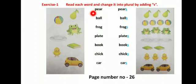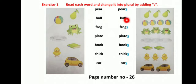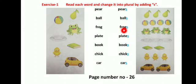P-E-A-R, pear — this is singular. There are three pears, so you add S: pears. Next, one ball is there — its plural side shows four balls, so you write B-A-L-L, ball, and add S: balls. Here, only one frog — but three frogs on the plural side, so you write F-R-O-G, frog, and add S: frogs.